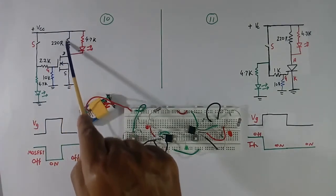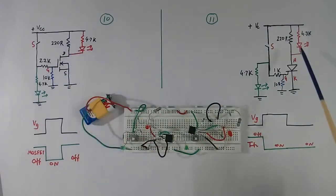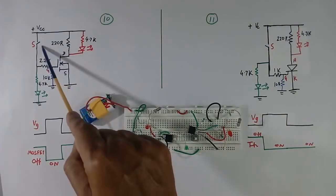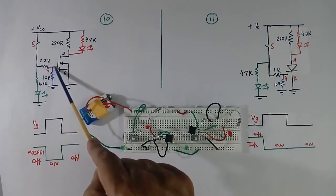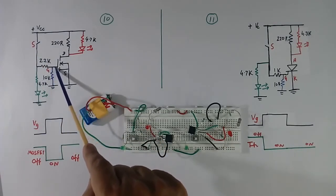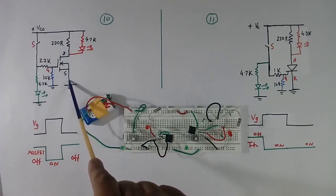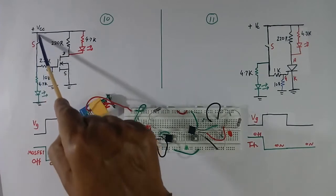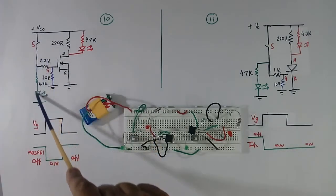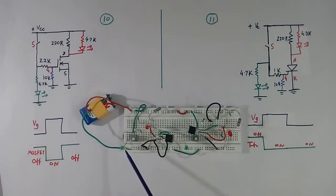This is load resistance. When we close the switch, voltage will come here and MOSFET will become ON. And as soon as voltage comes here, this green LED also will glow.